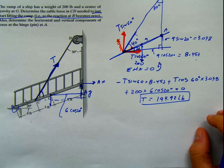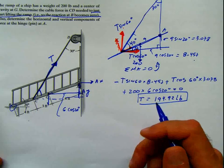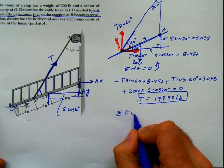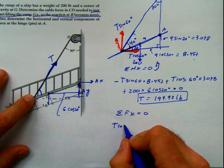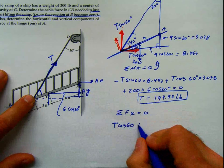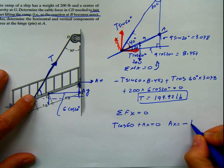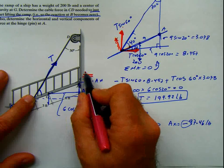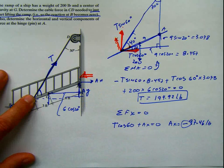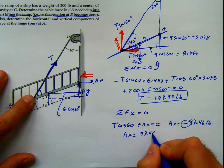Once I have T, I do summation of forces in x and summation of forces in y. Summation of forces in x equals zero: T cosine 60 plus Ax equals zero, which gives Ax equals negative 97.46 pounds. The negative sign means I assumed Ax in the wrong direction, so Ax is 97.46 pounds acting in the opposite direction to what I assumed.